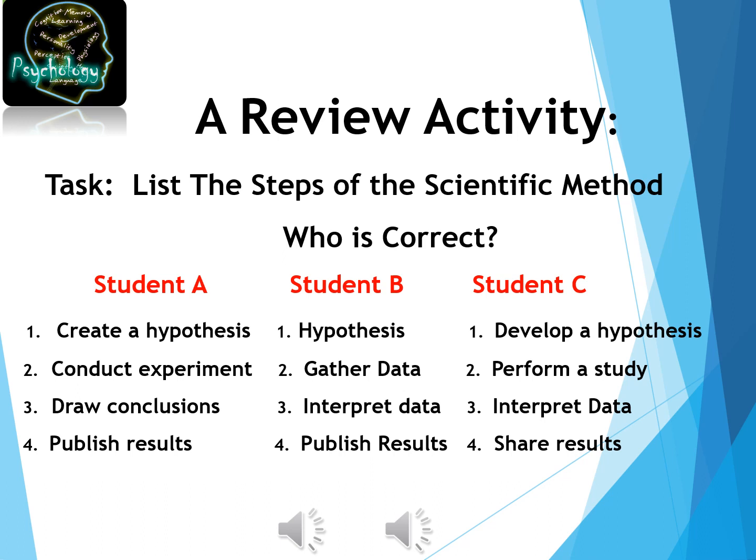Now let's return to our review of the scientific method. Look at these three students — A, B, and C — and see if each answer would be acceptable on a test. Student A: step one is great; step two is a big problem — too specific, it leaves out many research methods; three is fair enough; four is also good. Student B: number one is much too lazy — just writing 'hypothesis' would not receive credit; two, three, and four are all fine. Student C: one is good, two is vague enough to be good, three is good, and four is good. Make sure that if asked this question on a test, you would be able to answer it easily.